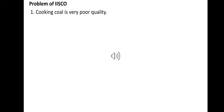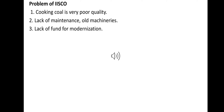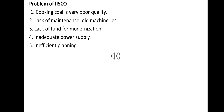Problems of ISCO: first, coking coal is of very poor quality. Second, lack of maintenance and old machines. Third, lack of funds for modernization. Fourth, inadequate power supply. Fifth, insufficient planning. These are the main problems of ISCO.